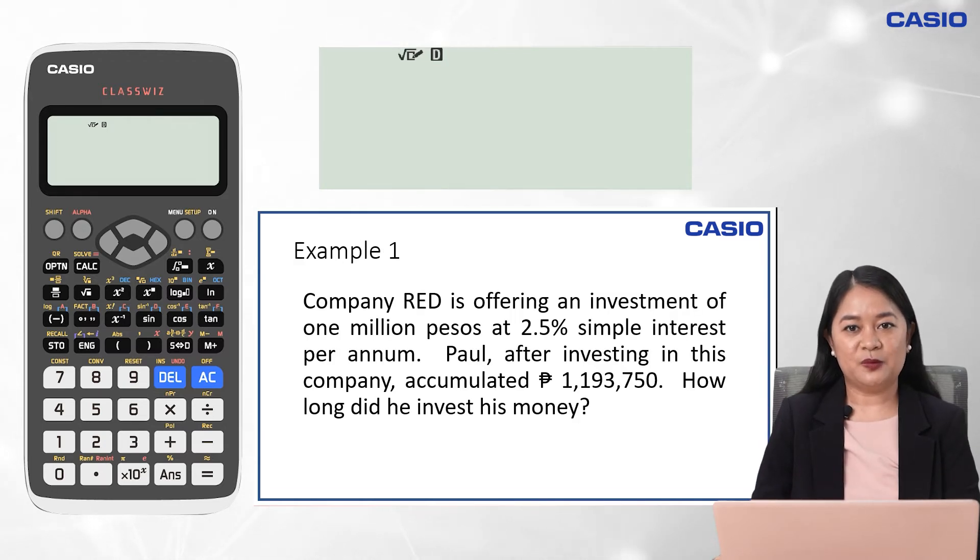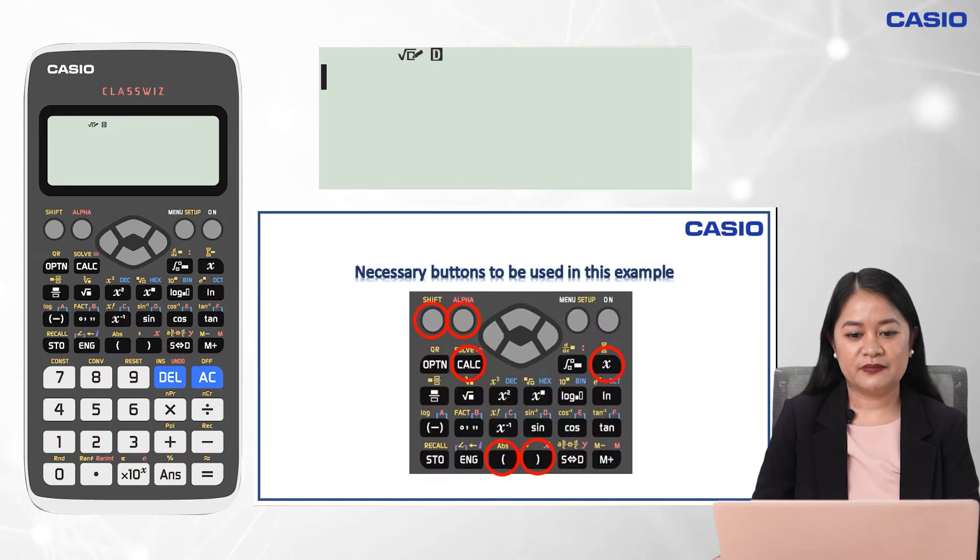For example, in this problem, the given are the principal value of 1 million pesos, annual interest rate of 2.5% or 0.025, and future value of 1,193,750, while the unknown is the period of time. So the formula for future value is applicable to us in solving this problem. Using the calculate menu of Casio Classwiz, we will just represent the period of time as x. Take note of the basic buttons to be used in our first example: shift, alpha, calc, open and close parentheses keys, and x.